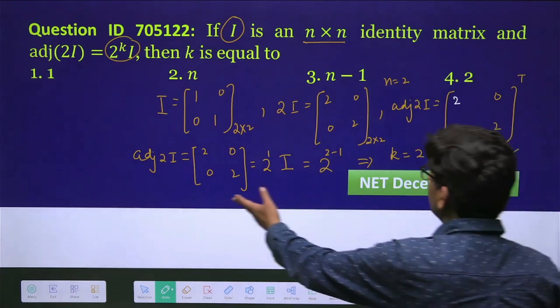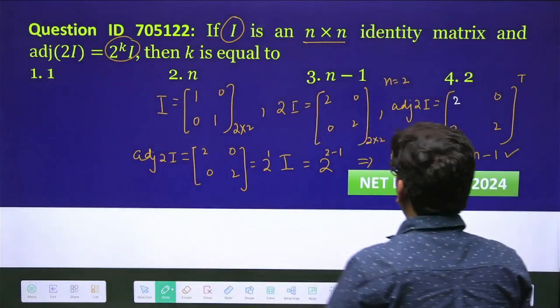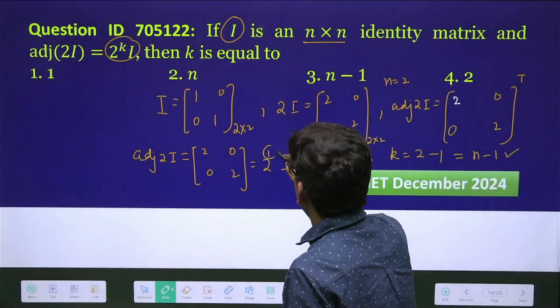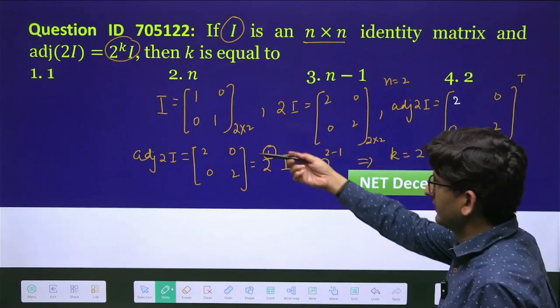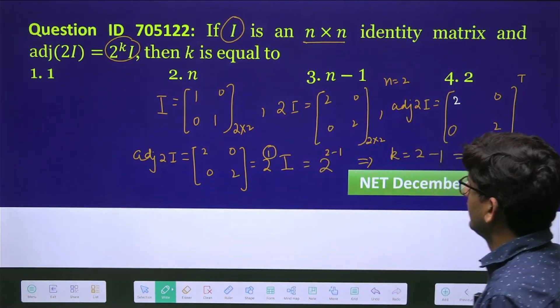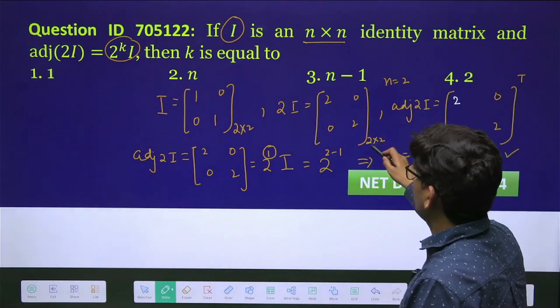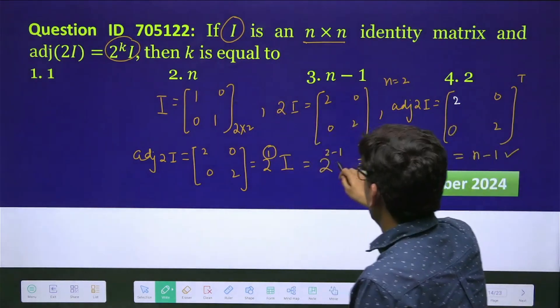Now you can rule out the options also. Like for example, this 2^1 is for a particular case, so option 1 is ruled out. And I have taken this n=2, so that's why the answer is k=1.